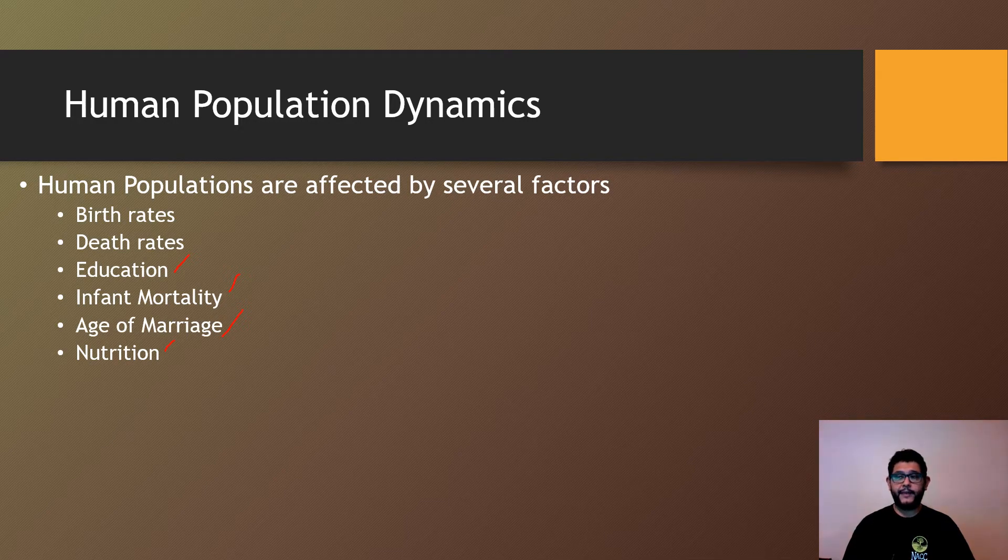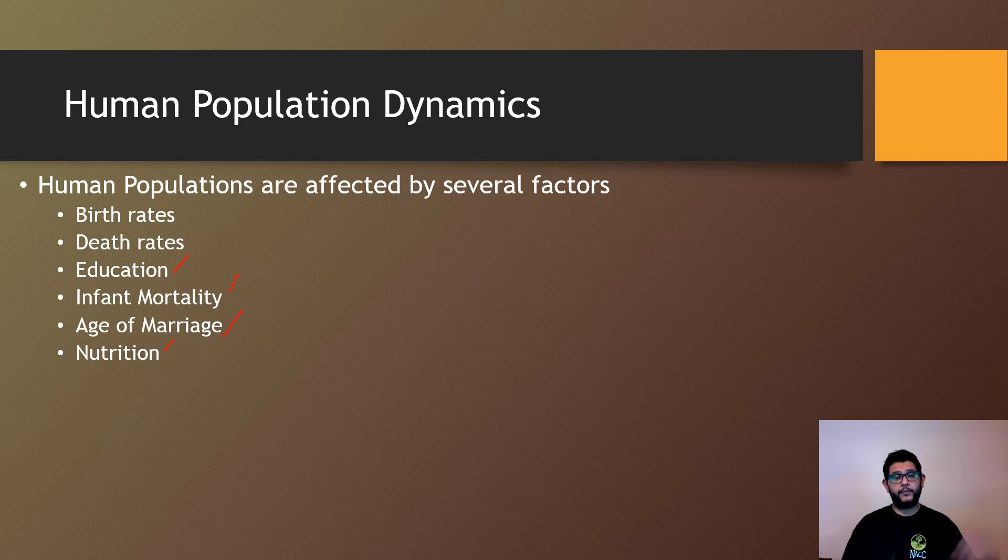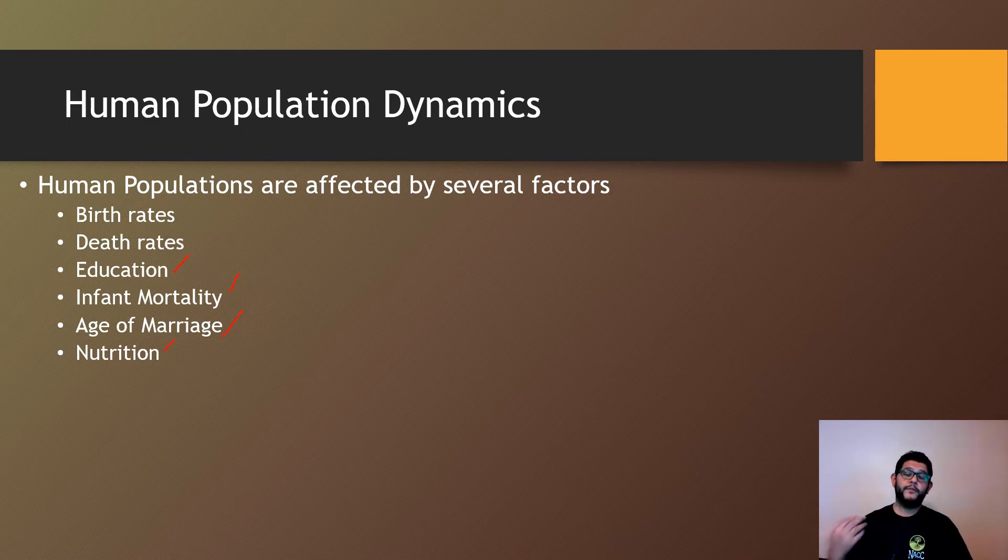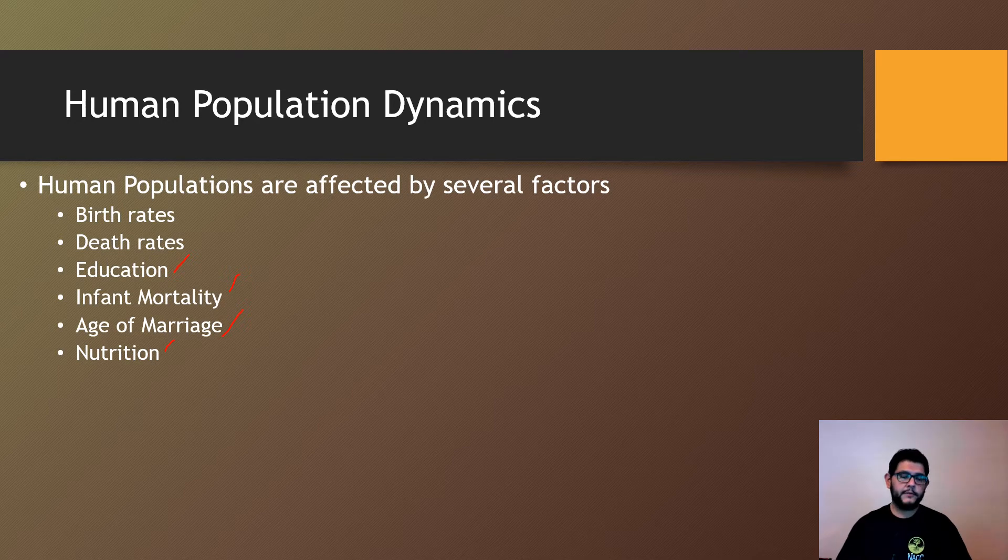And then other factors are going to be the age of marriage. That's going to tell how many babies are going to be had and how fast the population will grow. And of course nutrition. Because for humans, if there's not enough valid calories and micronutrients available, then there's going to be issues with having babies that are going to play a big role. So that's some differences between human populations and biological populations, which just means ecological groups.